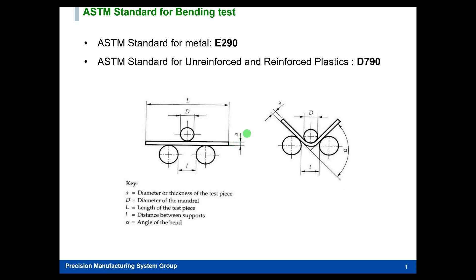There are several parameters we have to consider in designing our machine and preparing our specimen. The most important parameter for bending is the L parameter — the distance between the two support points. This parameter is crucial for the bending test, and almost all other parameters of the specimen are somehow related to and dependent on this parameter.